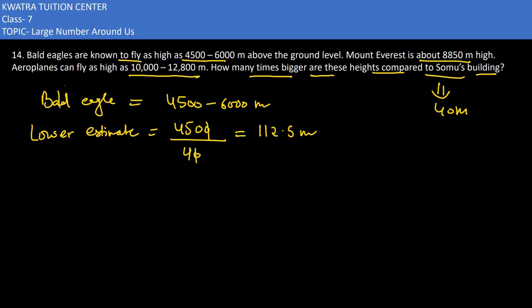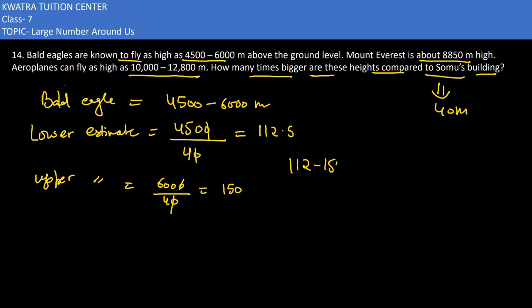So the bald eagle flies about 112.5 times higher than the Somos building — at least 112 times. Now for the upper estimate, we take 6,000 divided by 40. Cancelling zeros, that's 600 divided by 4, which gives 150. So the bald eagle flies about 112 to 150 times higher than the Somos building.